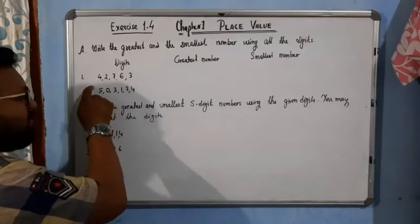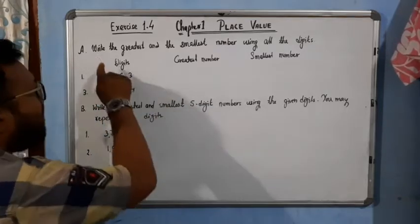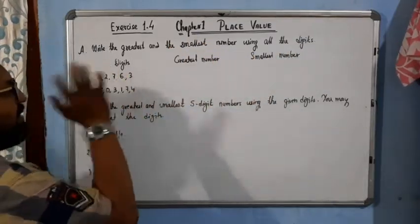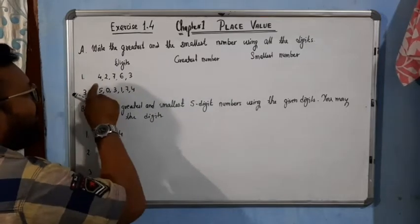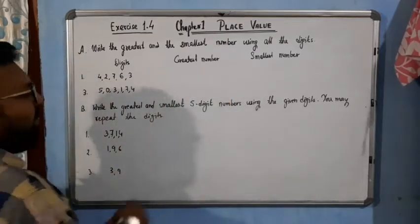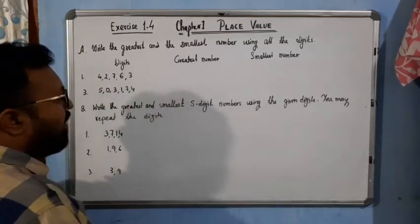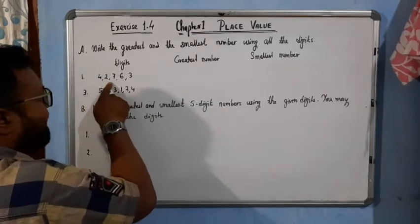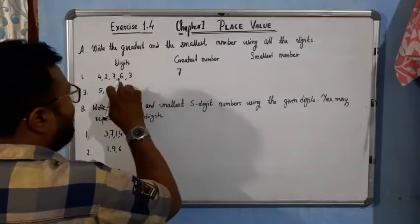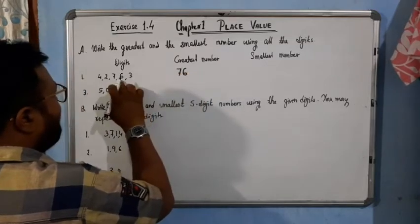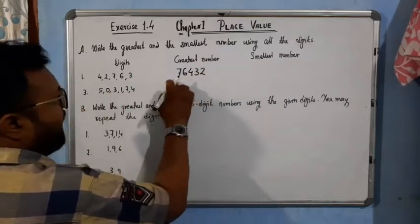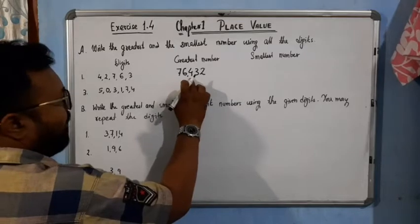First I will show these two and you will get the idea. Write the greatest and the smallest number using all the digits given. In the first one we have 4, 2, 7, 6, 3. For the greatest number, we start from the highest digit. Obviously 7 is the greatest, so we write 7, then 6, then 4, then 3, then 2. This gives us the greatest number: 76,432.